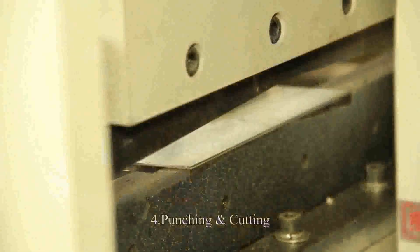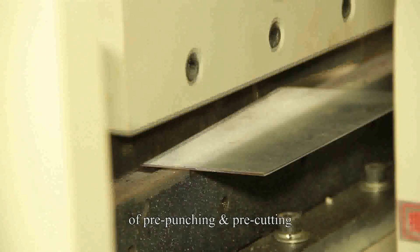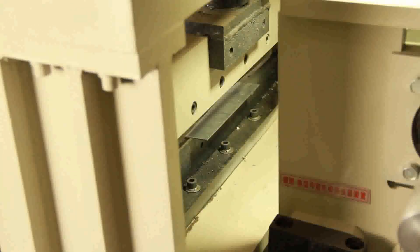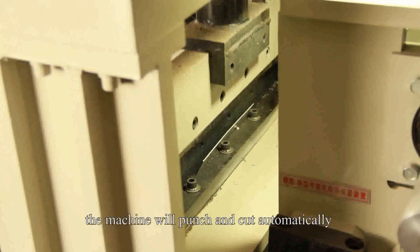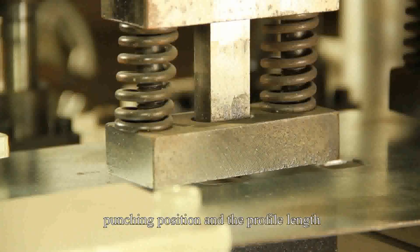Number 4: Punching and Cutting. When the material reaches the position of pre-punching and pre-cutting, the machine will punch and cut automatically according to the preset punching position and the profile length.